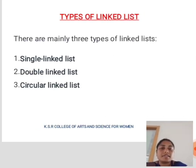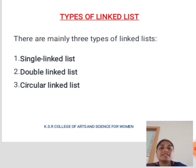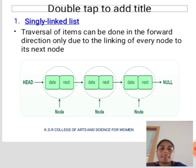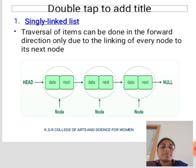Types of linked list. They are mainly categorized into three types. First is a singly linked list. Second one is a doubly linked list. Third one is a circular linked list. Singly linked list: transfer of items can be done in the forward direction only, due to the linking of every node to its next node.